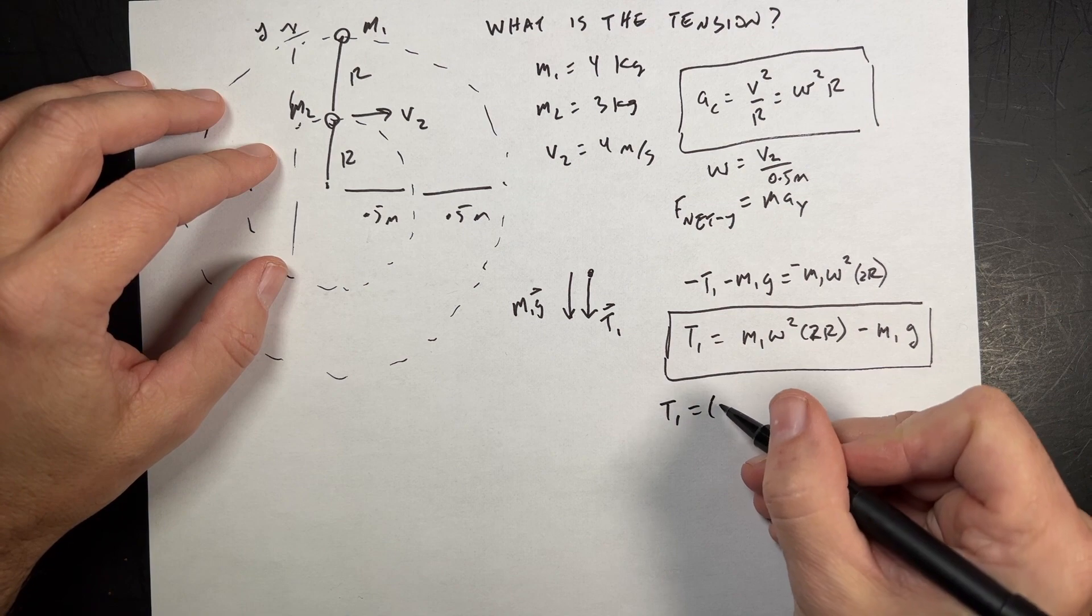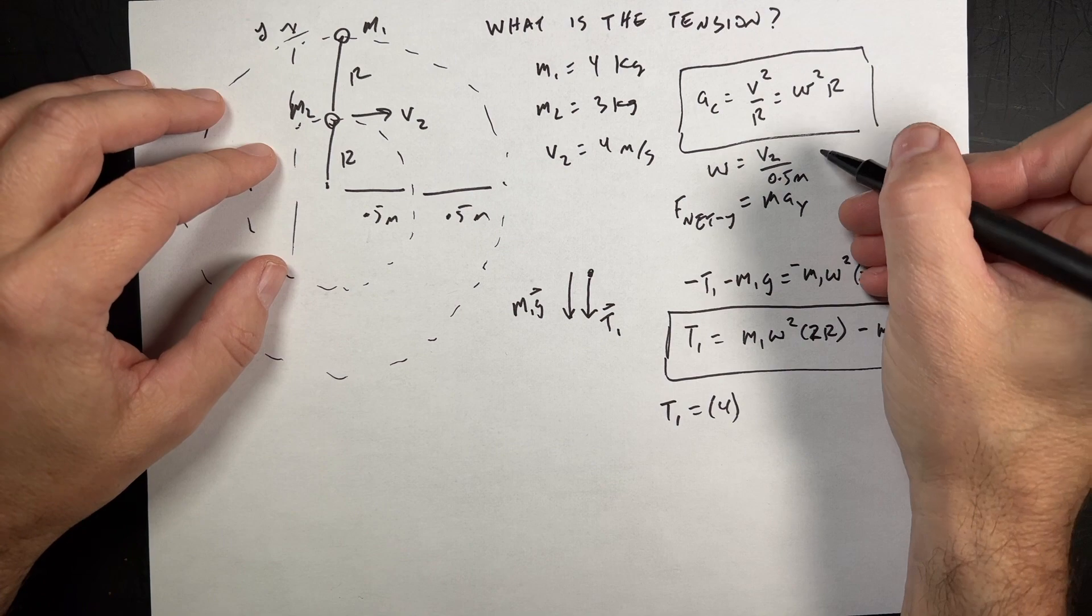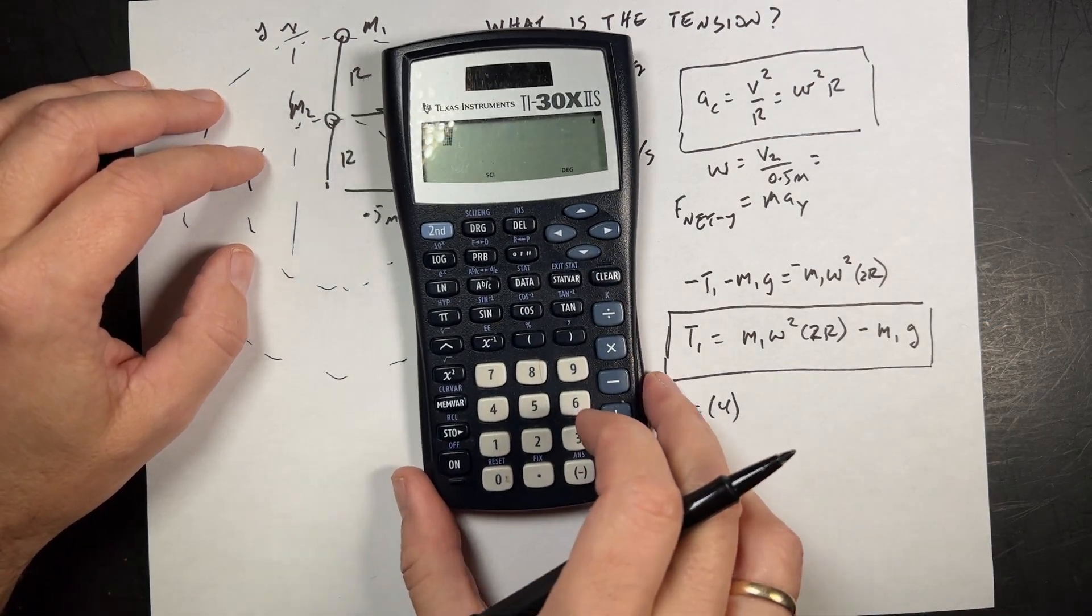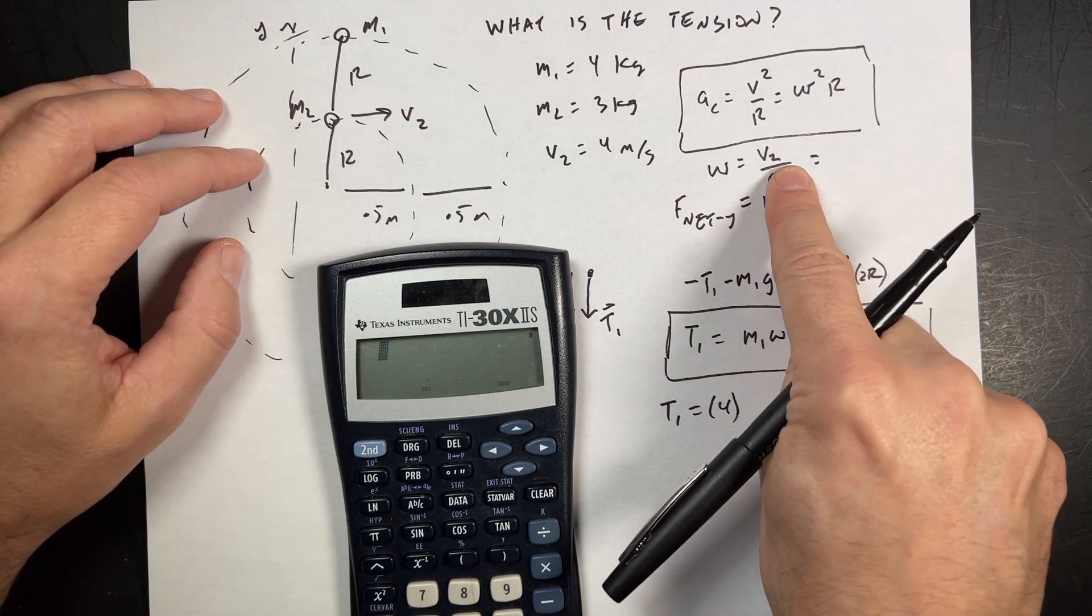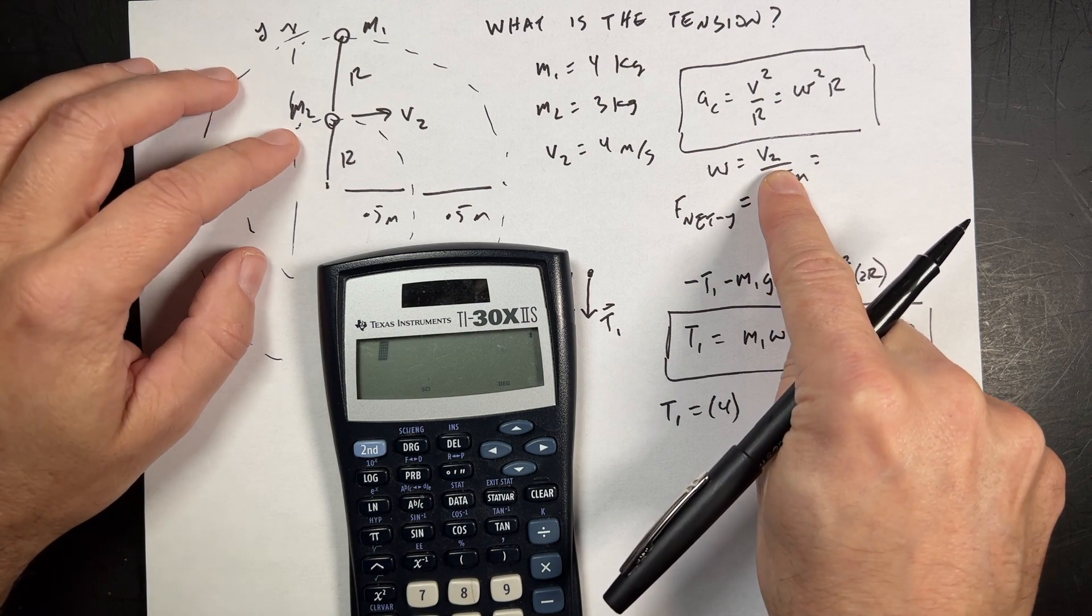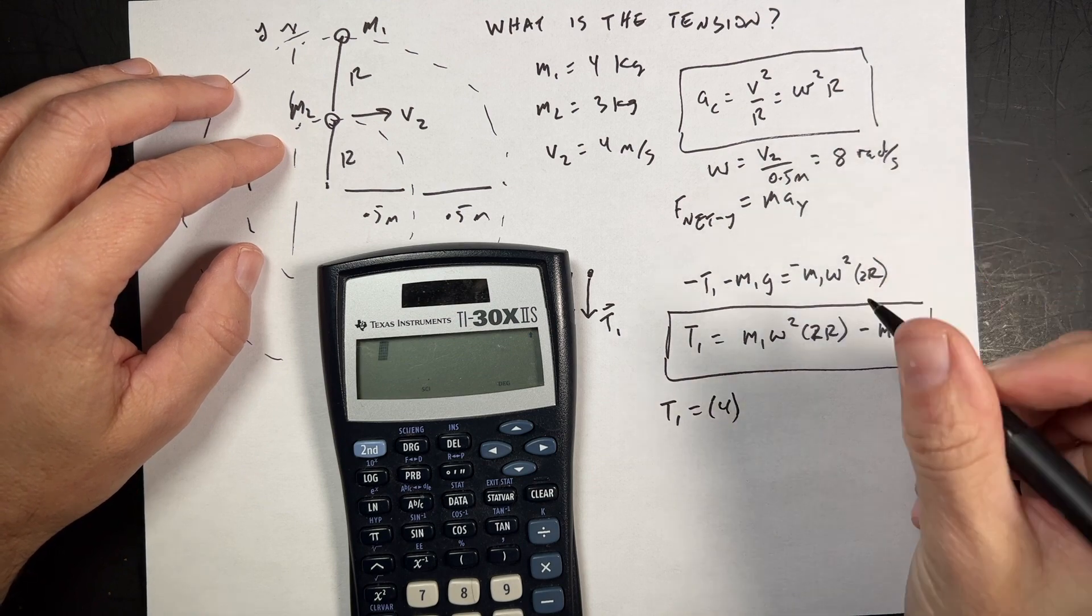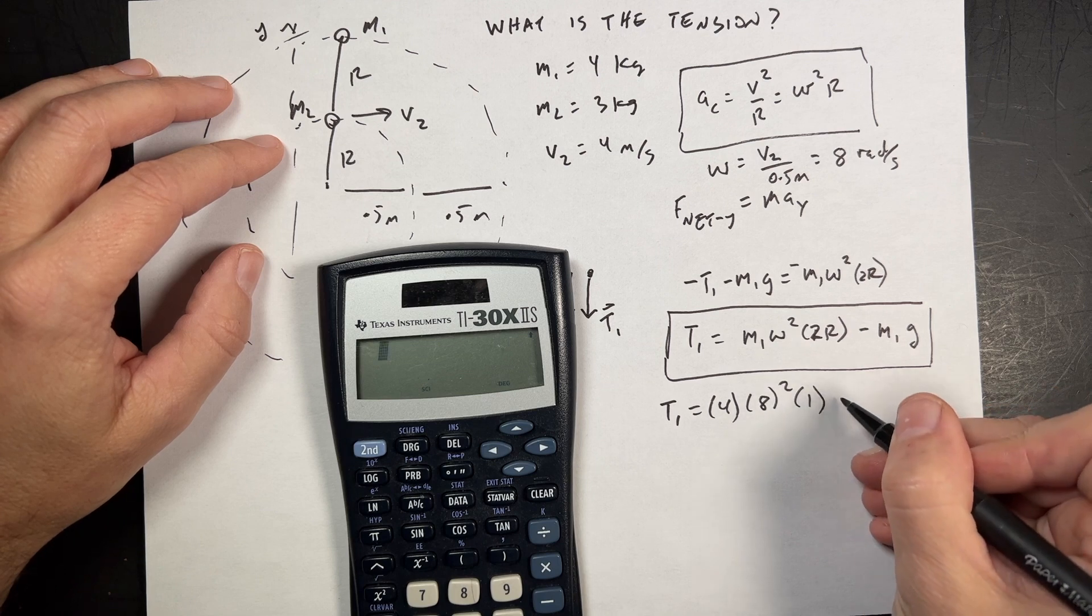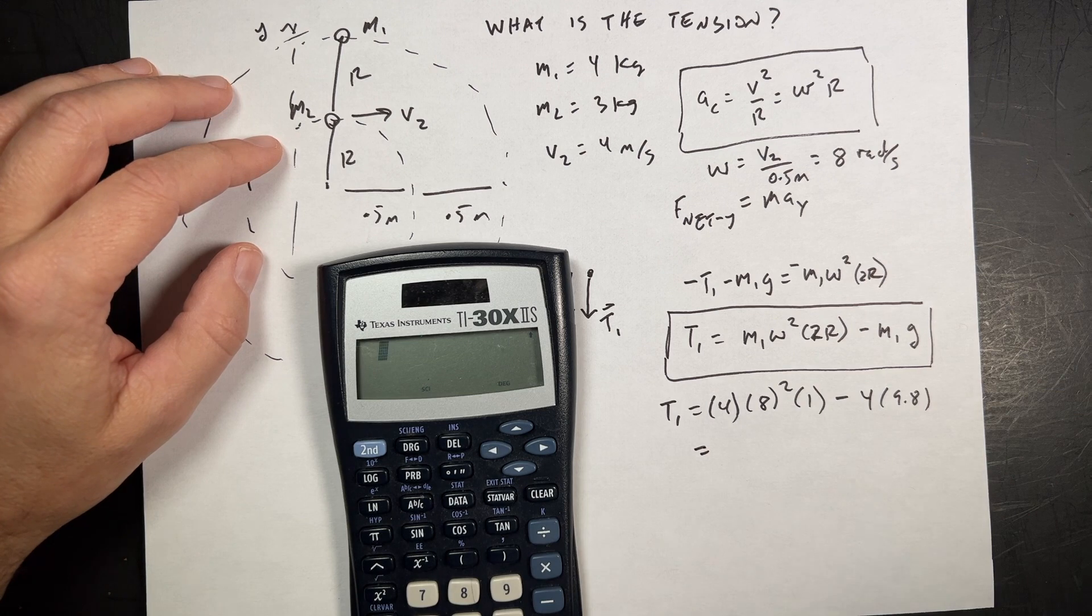So t1 is going to be mass 1, which is 4, times omega squared, which is going to be, let's get this value. I am going to actually do it the way people like to do it. Get all the numbers. Move my calculator so you can see it. How about right there. Let's get this. V2 is going to be 4 divided by 0.5. Oh no, I am going to do that. That's 8 radians per second. So that's going to be 8 squared, 1, minus 4, times 9.8.